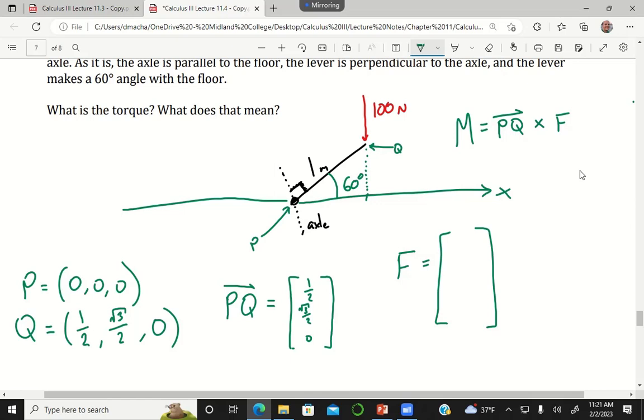Zero, negative one hundred, zero - perfect, yeah. Zero because this force vector that I put in red doesn't have any component in the x direction, so I put zero there. The whole force is in the downward y direction, so that's why I said negative 100 for my y component. This is all happening in the xy plane, so I can say zero for my z coordinate.